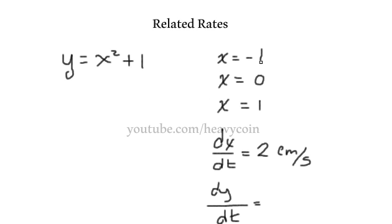When x is equal to negative 1, we'll have a unique dy/dt. When x is equal to 0, then we're going to find dy/dt, and when x is equal to 1, we're going to find dy/dt.